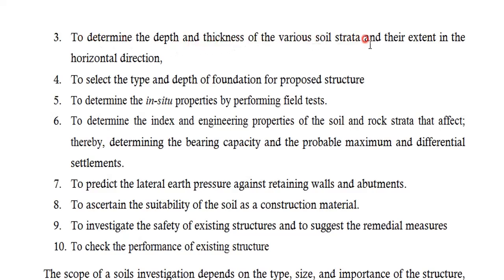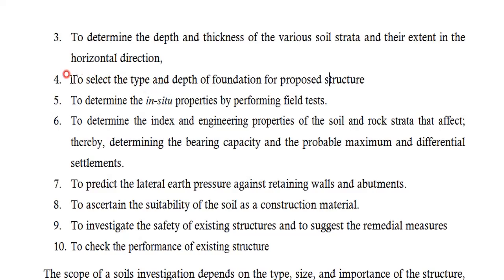We determine the depth and thickness of various soil strata, their extent, horizontal distribution, and depth. As you go deeper, the soil may have many layers — two or three layers — some very weak and some very strong. We also need to select the type and depth of foundation for the proposed structure. There are many types: isolated foundation, stepped footing, pile foundation, caissons, combined footing. To select the right one, we need a soil exploration report.